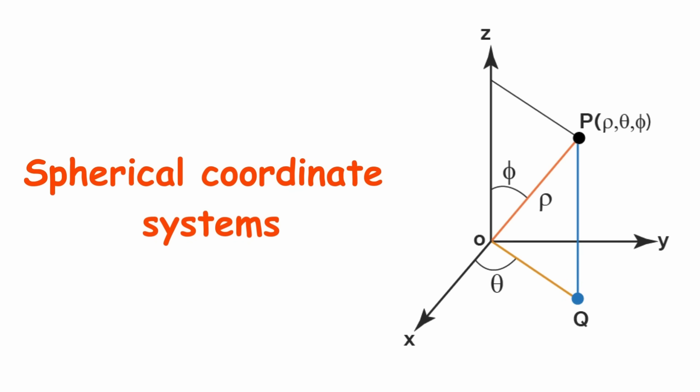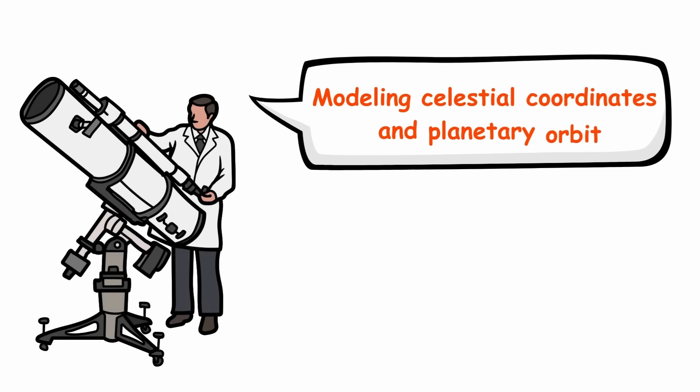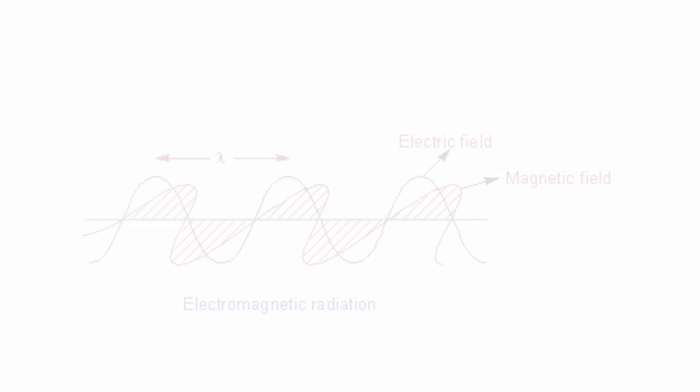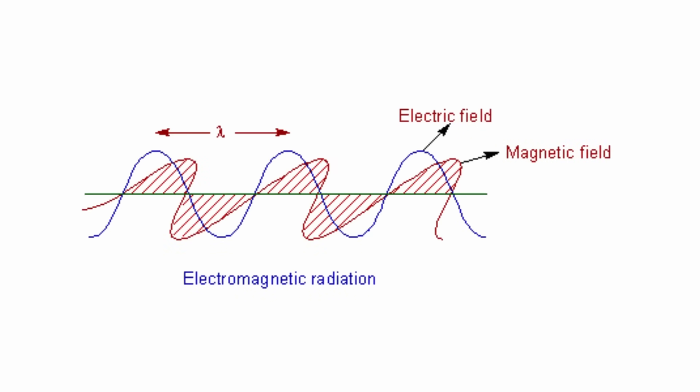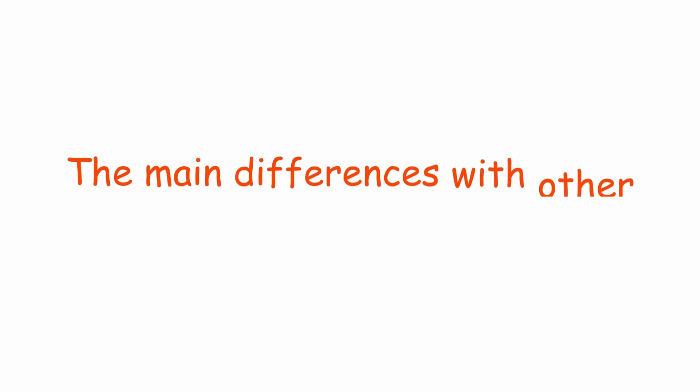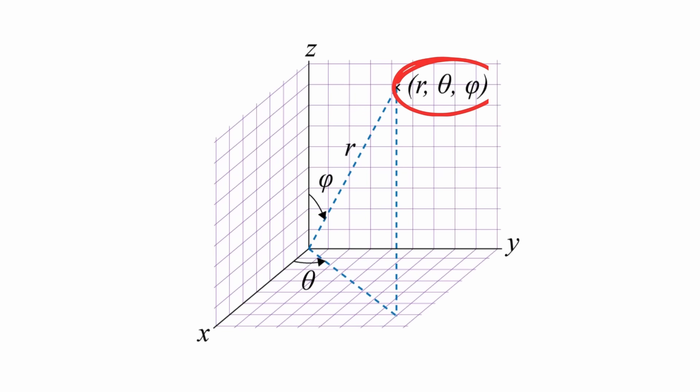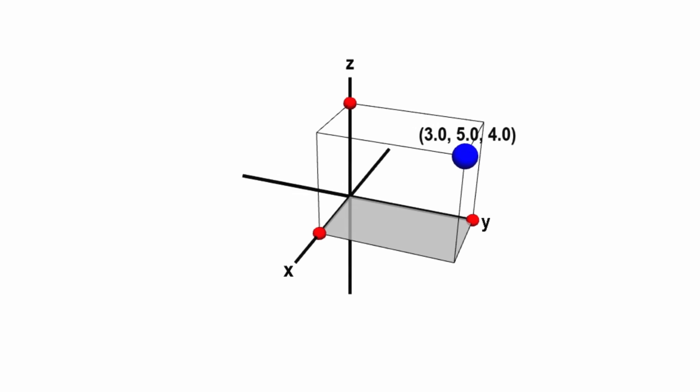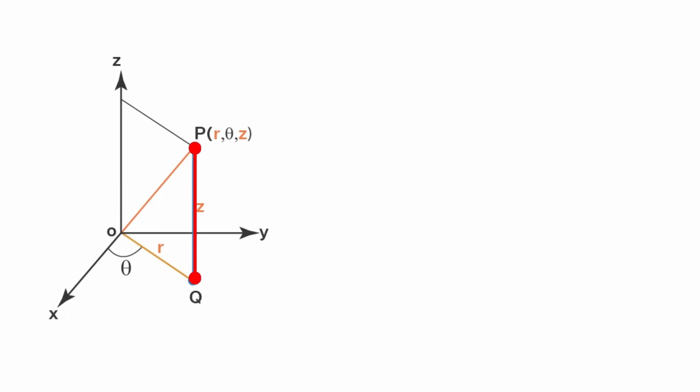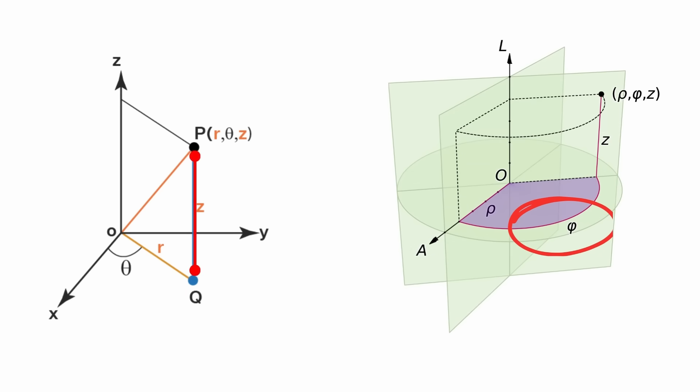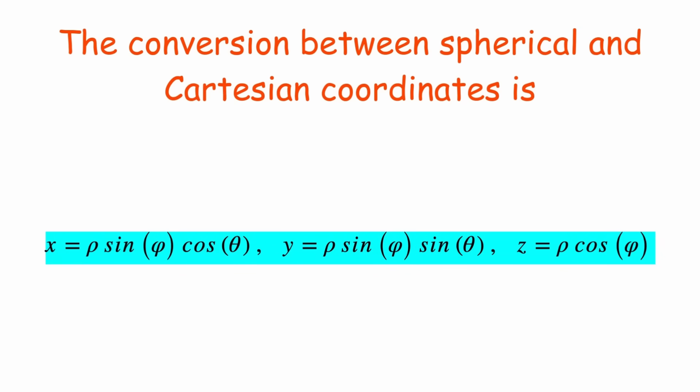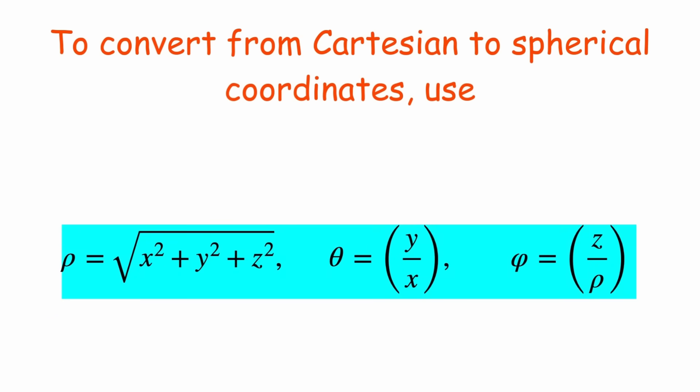This system is useful when problems present spherical symmetry, as in astronomy, modeling celestial coordinates and planetary orbits, electromagnetic waves, and quantum physics. The main differences with other coordinate systems are: this system focuses on distances and angles, rather than displacements on perpendicular axes. While cylindrical coordinates use a height z, spherical coordinates use a second angle, phi.